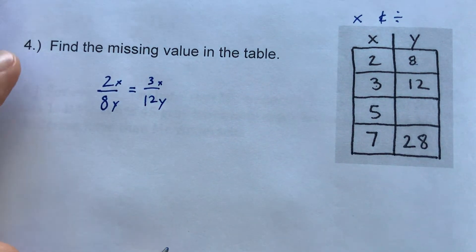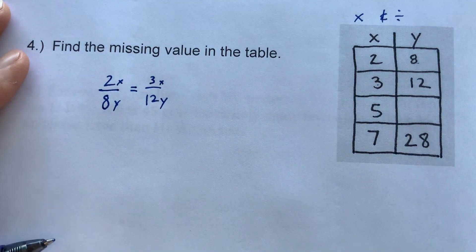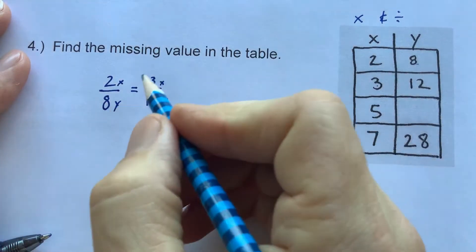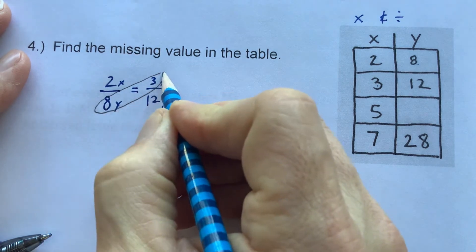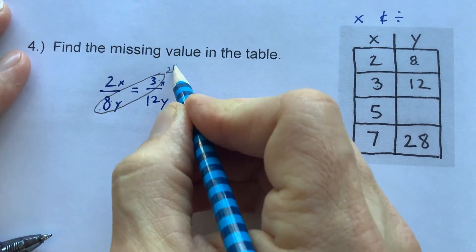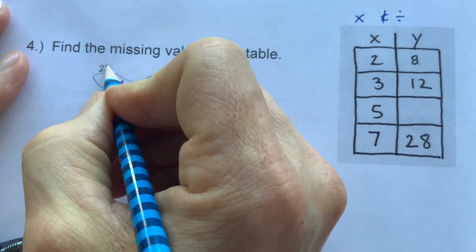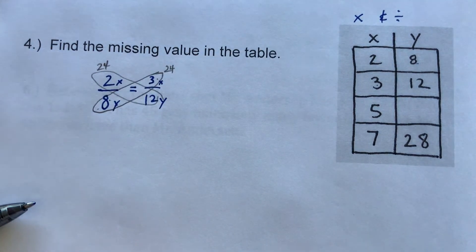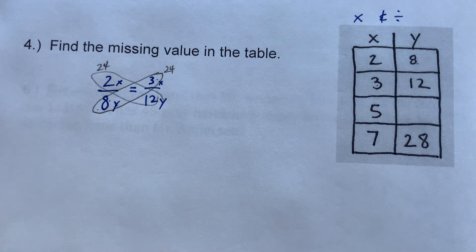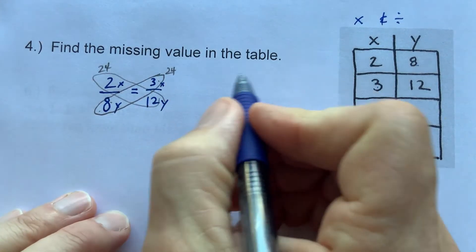Now, do these equal each other? Here's the easiest way to find out. We're going to do what's called the cross products. Diagonal. 8 times 3 is 24, 2 times 12 is 24. So those two are equal, which means this will work by using proportions.